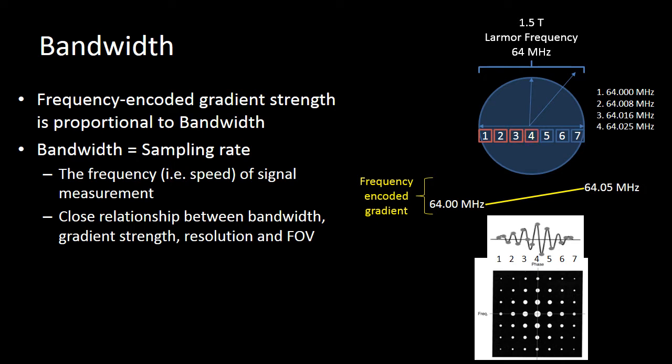They will each have a slightly different unique Larmor frequency, and those unique Larmor frequencies are what allow us to localize them within real space and generate an image. That's why we have a frequency encoded gradient.